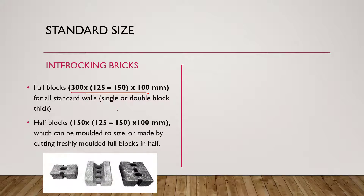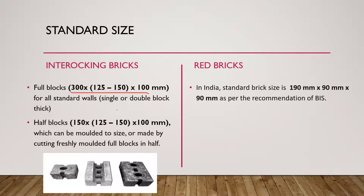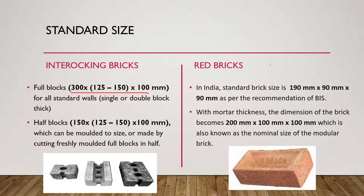Half blocks are molded to size or made by cutting full blocks to 150 × 125–150 mm in breadth and 100 mm in depth. For red bricks in India, the standard size is 190 mm × 90 mm × 90 mm as per the Bureau of Indian Standards. With mortar thickness, the nominal size becomes 200 mm × 100 mm × 100 mm.